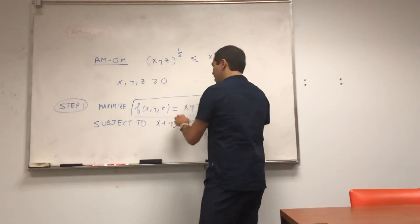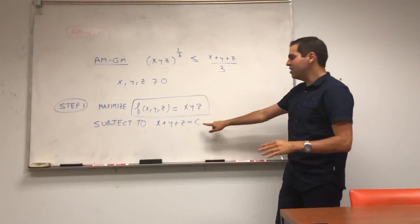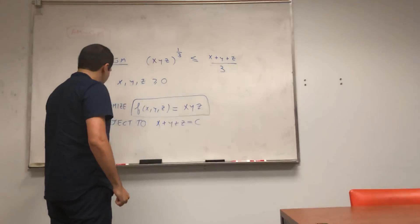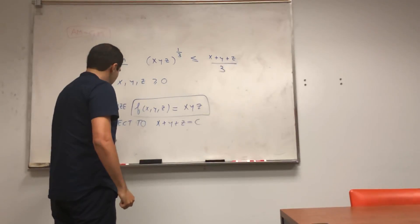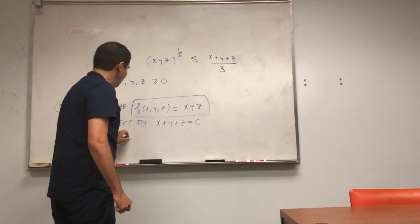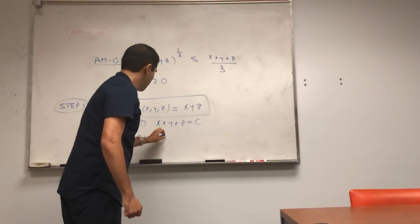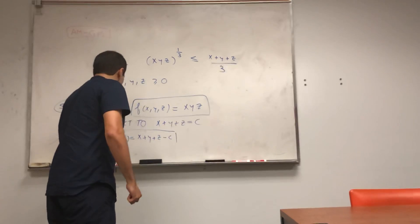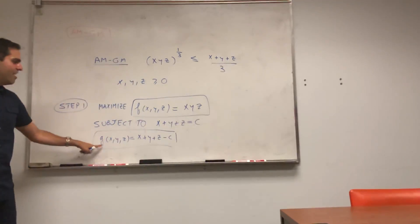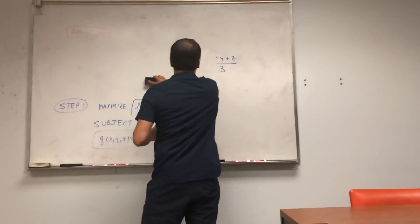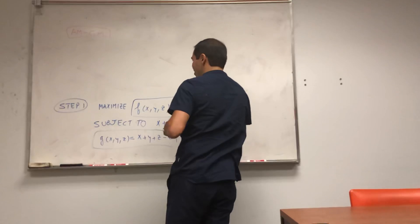So, we want to maximize this function subject to that constraint. So for the constraint, just put everything on the left-hand side, which you don't really need to do, but let's just be systematic. So this is a function F, this is a function G, and now we want to use Lagrange multipliers, which says the following.